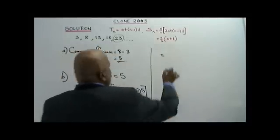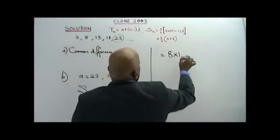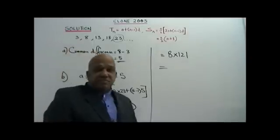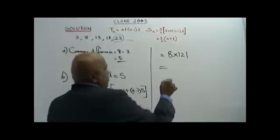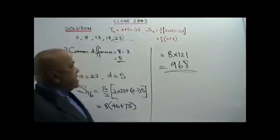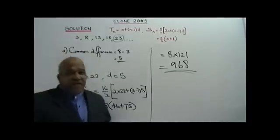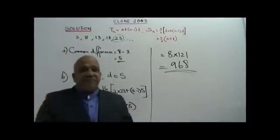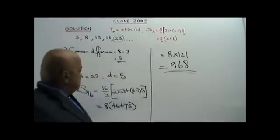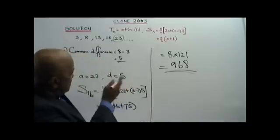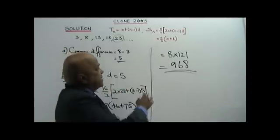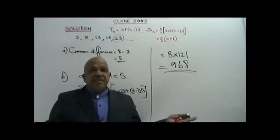You get 8 times 121, which is 968. That is your answer — the sum of the first 16 terms after the 4th term. Just apply the right technique, the right formula, and you arrive at the answer.